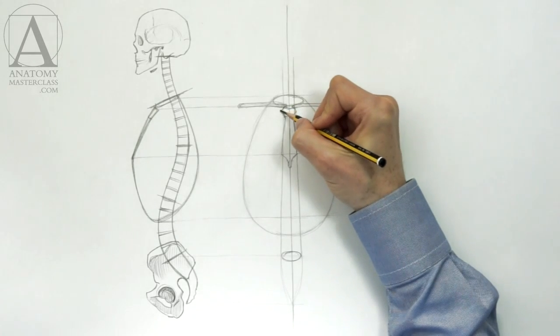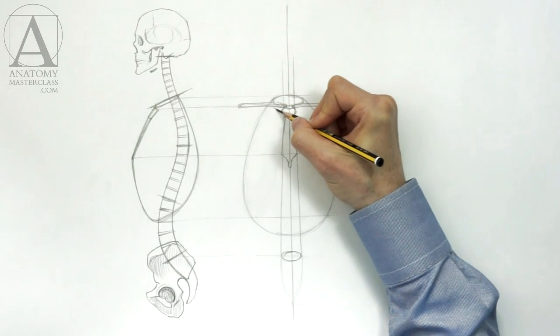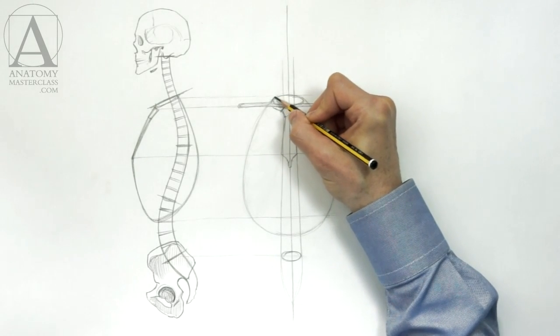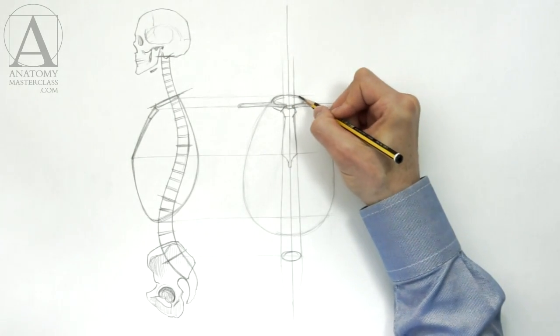Just below the collarbones, the first pair of ribs is attached to the breastbone. This pair defines the base of the neck and is as wide as the neck itself.